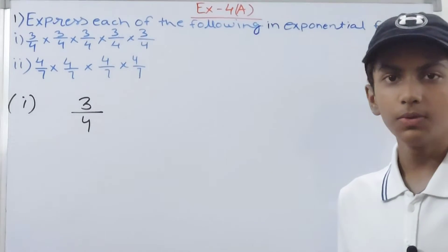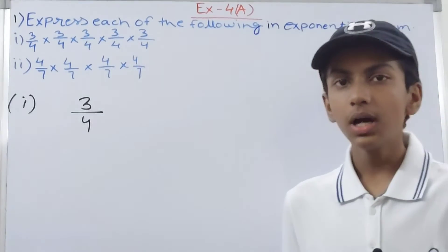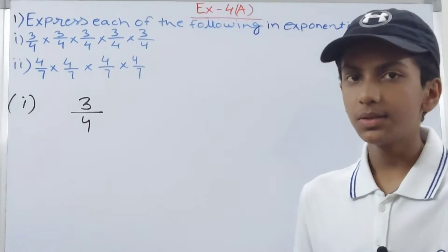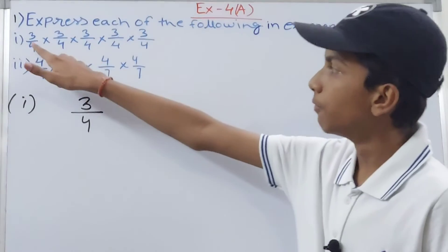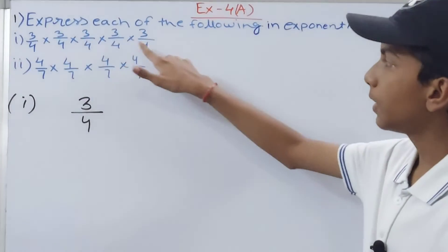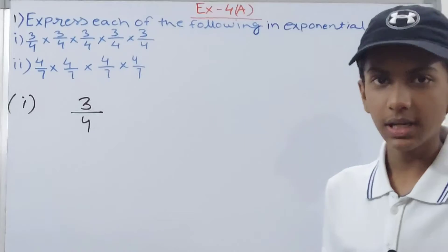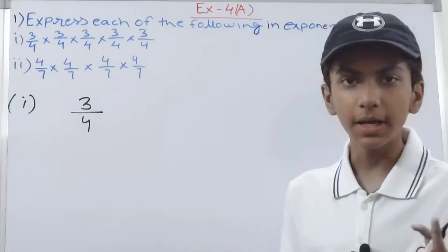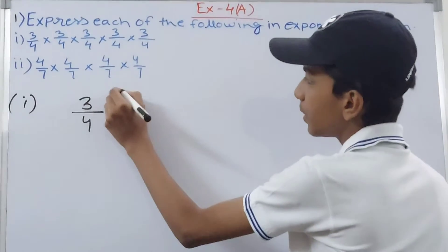times. Now we will count how many times our base is being multiplied: 1, 2, 3, 4, and 5. So 5 times. This means that our exponent will be 5.